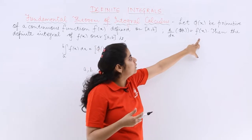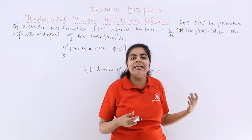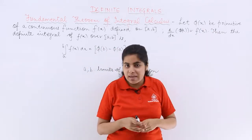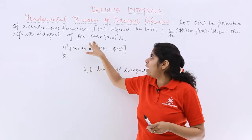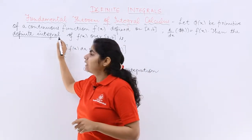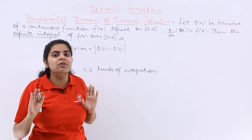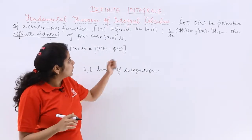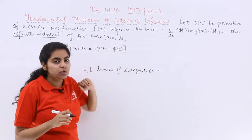So differentiation of φ(x) will give me f(x) because φ(x) is the anti-derivative. And now then the definite integral of f(x) over [a,b] - mind the words definite integral, we are not talking about indefinite but definite integral over this region [a,b] - would be given by what?